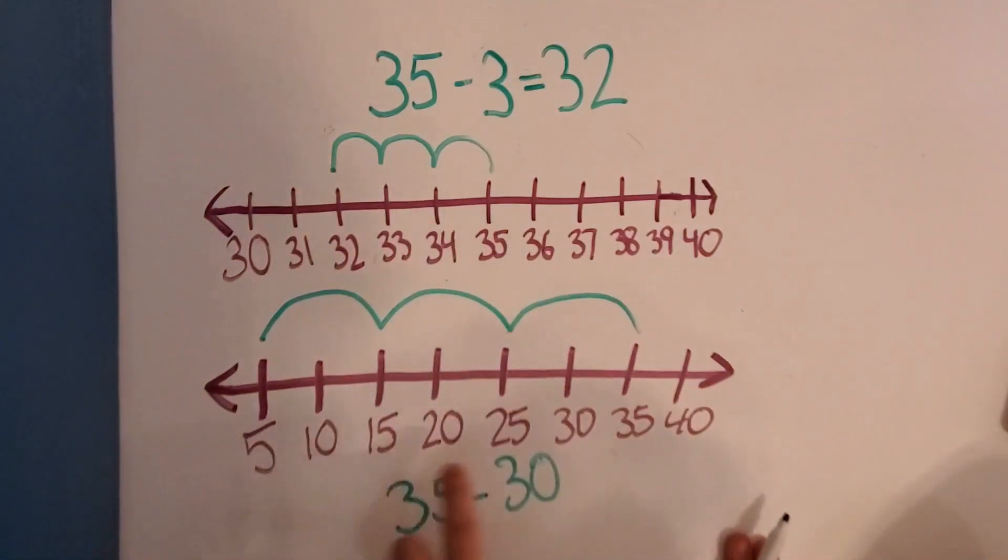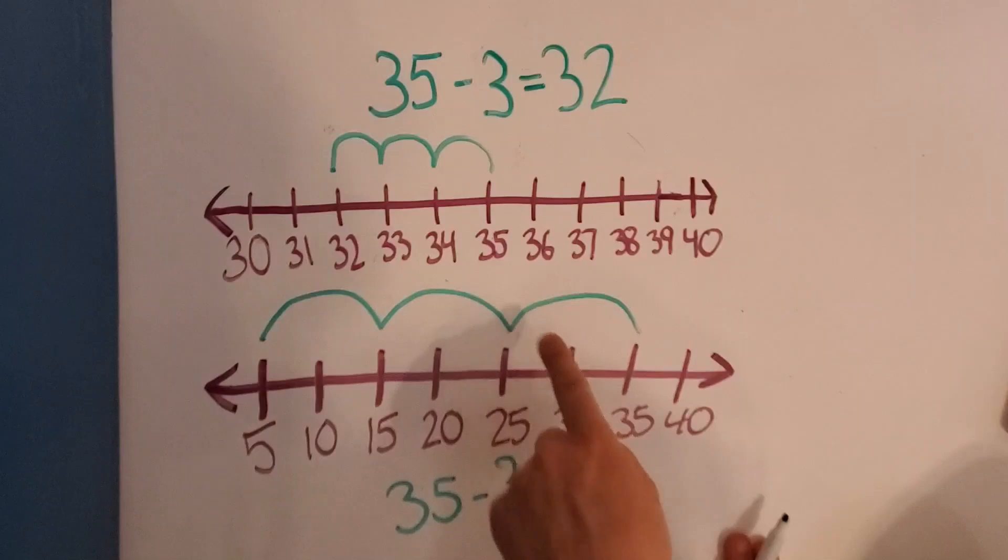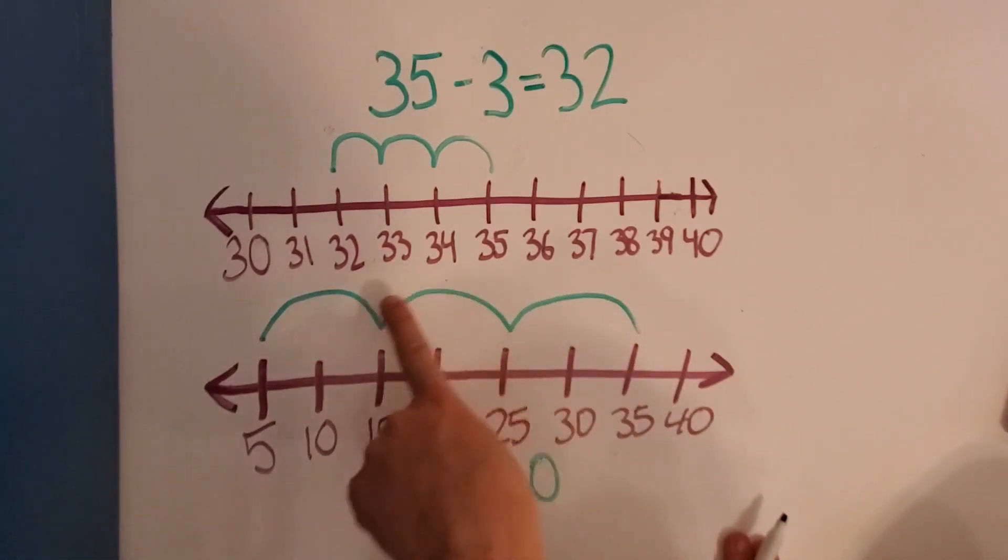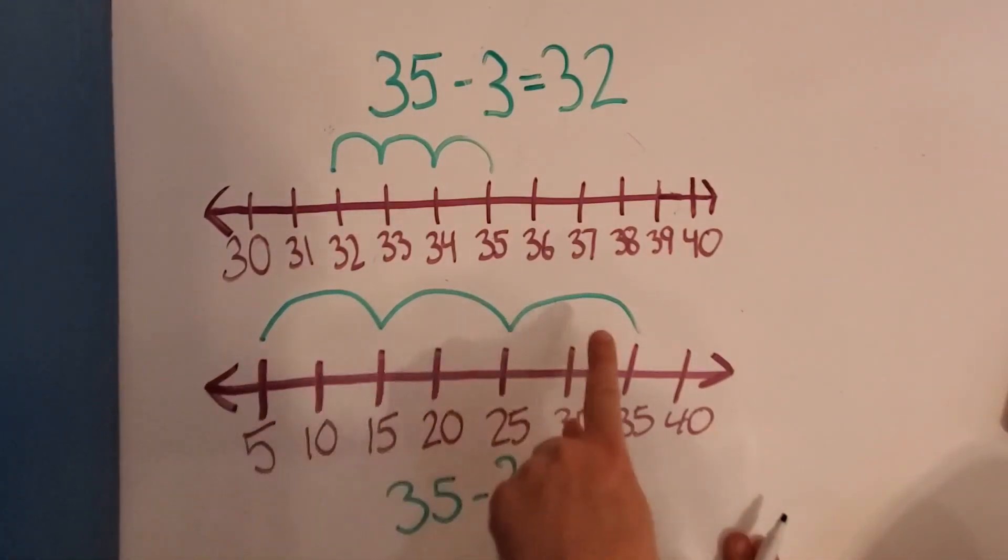So you see how this went up by 5? So each time I went back by 10's, it took up 2 spaces, because that's 2 fives, which equals 10. So we went 35 back 10 is 25. 25 back 10 is 15.